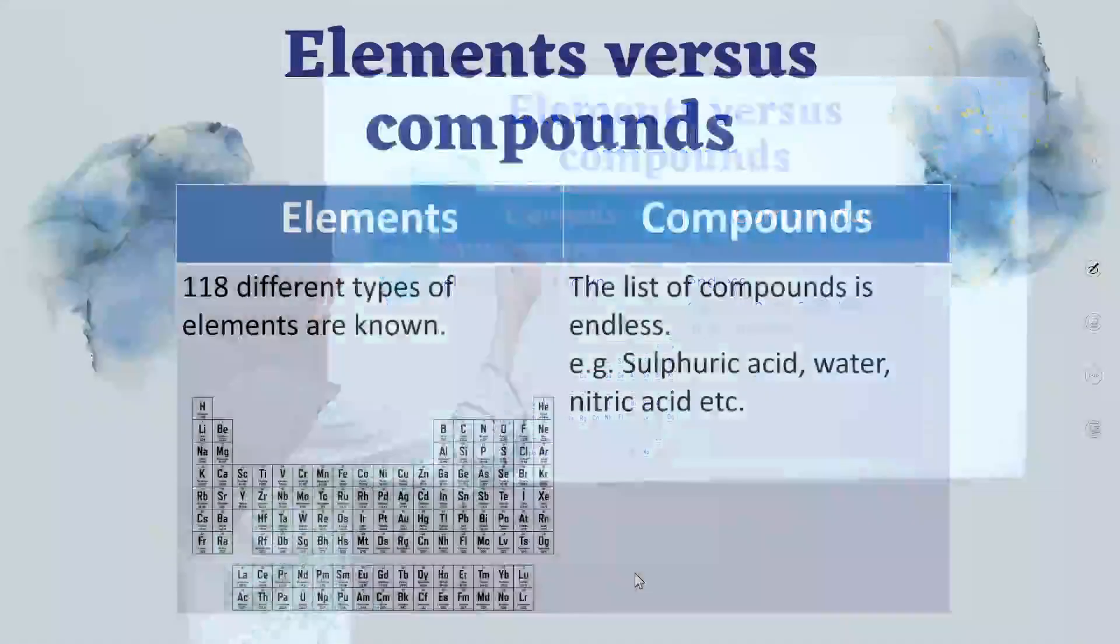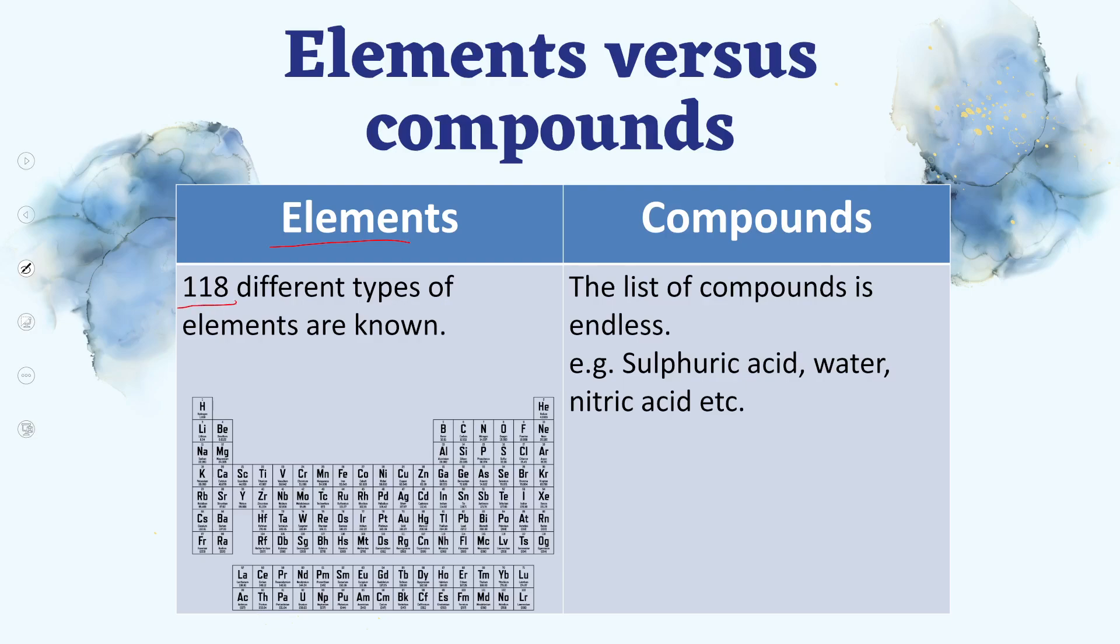Furthermore, humare paas, agar elements ki baat ki jaye, toh there are 118 elements that are arranged in a periodic table. Aap dekh sakte hain, periodic table ke andar humare paas 118 elements arrange hui hain.